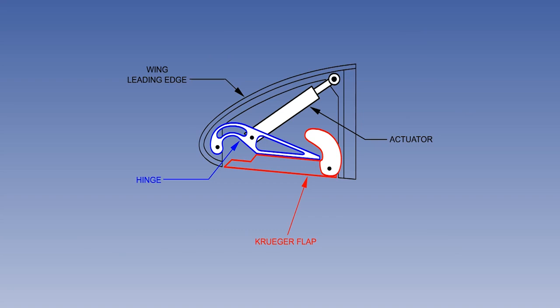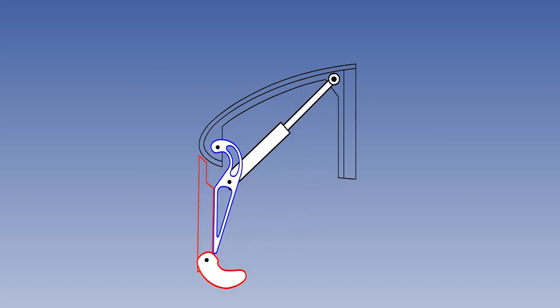The illustration shows a cross-section through the leading edge of the wing. You can see that the Kruger flap forms part of the leading-edge lower surface. When fully out, the Kruger flap gives a smoother path for the airflow over the leading edge of the wing, allowing the airflow to retain maximum kinetic energy.